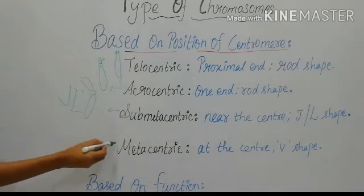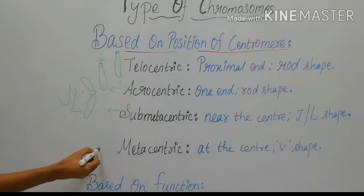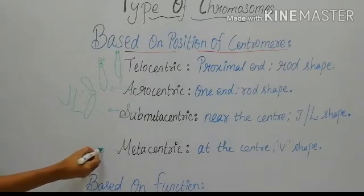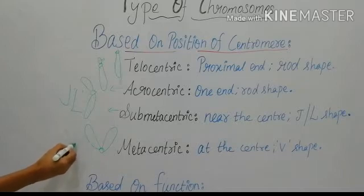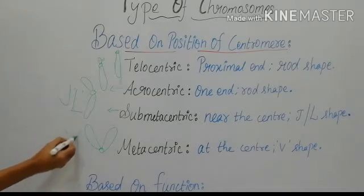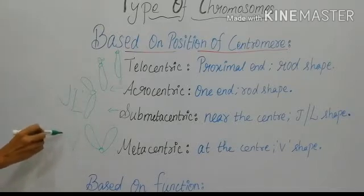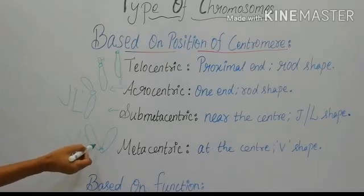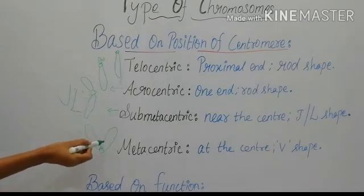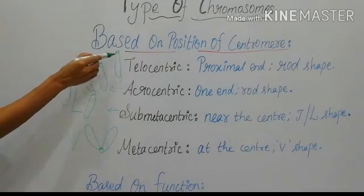Next is the metacentric chromosome. In metacentric, the centromere is present exactly at the centre. Hence, two equal arms are present and it is V-shaped. In a V, the two slanting lines are the same size — this is the centromere and these are the two arms of equal length. These are the types of chromosomes based on the position of the centromere.